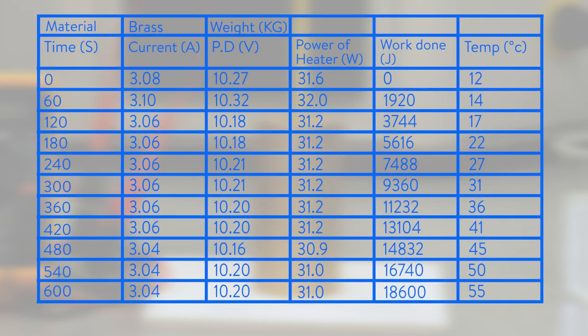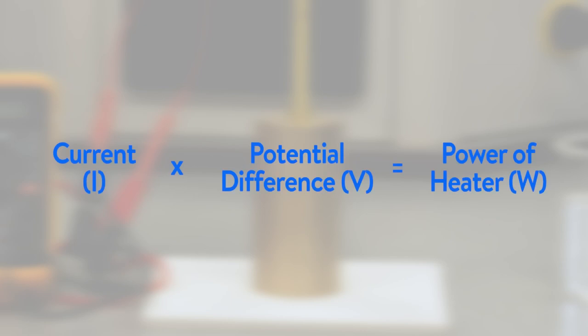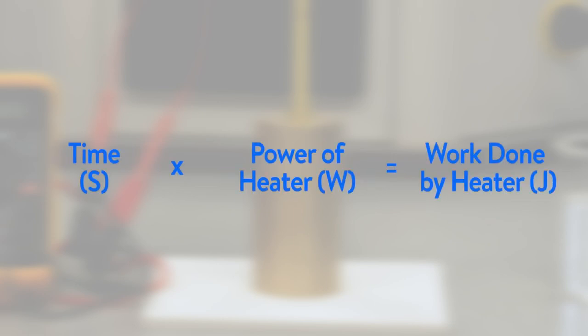The following results were obtained for a 1 kilogram brass calorimeter block. The readings on the ammeter and voltmeter shouldn't change and these can be used to work out the power of the heater. The power of the heater equals current i multiplied by voltage v. Once you've calculated the power of the heater, we need to calculate the work done in joules by the heater. Work done by the heater equals time in seconds times the power of heater in watts.